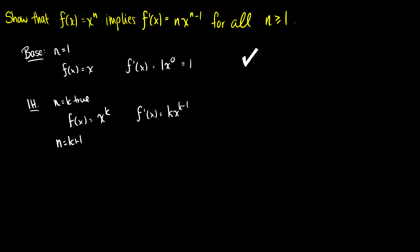So how do we do this? Well, let's take f(x) = x^(k+1) and we need to get it somehow into an x^k. We can change the exponent: x^(k+1) is the same thing as x^k times x. Here, x is our base case and x^k is our induction hypothesis. So we can use the product rule to show this is true.